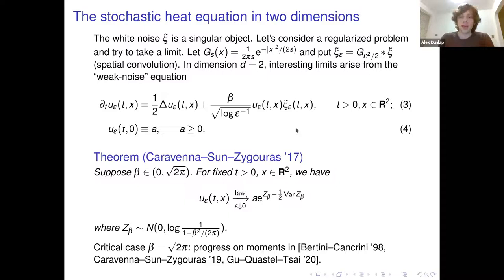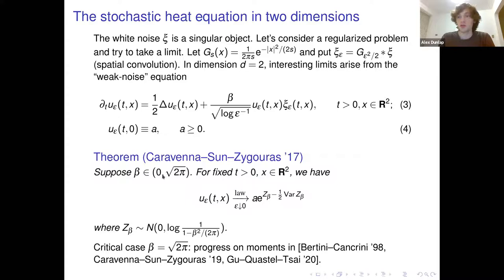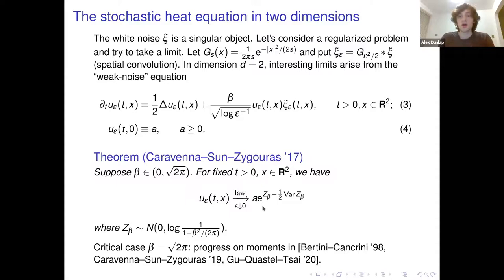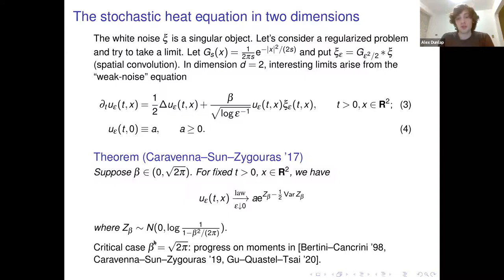This is due to Caravenna, Sun, and Zygouras in 2017. You divide the noise strength by square root of log epsilon, and require the constant in front to be below a critical threshold — beta equals square root of 2π. What they proved is that at a fixed time and fixed spatial point, looking at one-point statistics, there is convergence in law of the solution to a log-normal random variable, whose variance is known explicitly in terms of beta. This variance blows up at beta equals square root of 2π.